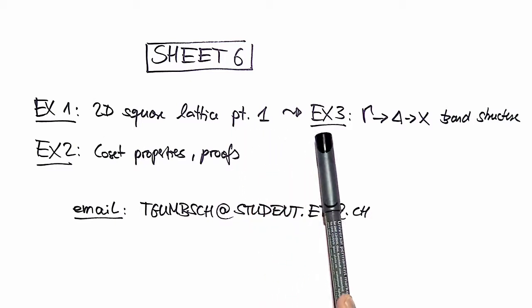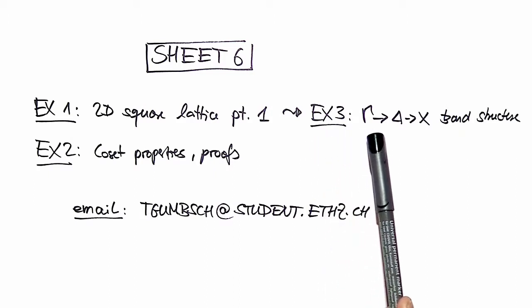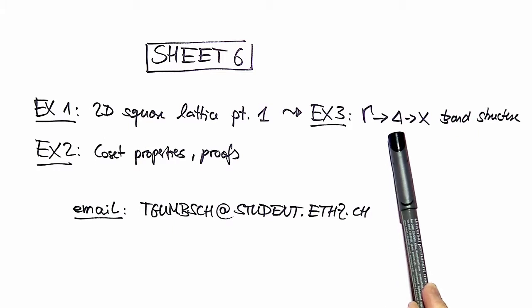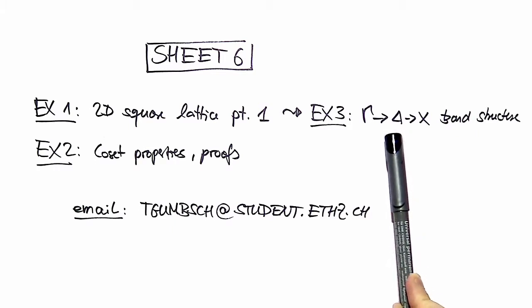So in exercise what I call exercise number three I did a more general approach. I analyzed the complete delta direction in the first Brillouin zone of this two-dimensional square lattice and assigned irreducible representations to the different bands and explained how these bands split when you apply a potential.